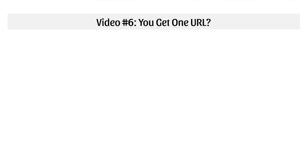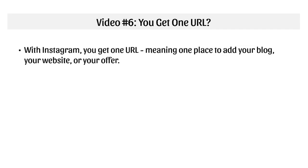Welcome back. This is video number six, called 'You Get One URL.' That's the reality with Instagram — you get one URL, meaning one place to add your blog, your website, or your offer. It's not like Facebook where you can create a post every single time and put a URL directly to your offer. In this video, I'll talk briefly about the concepts and fundamentals, then go to Instagram.com and show you what we're looking at.